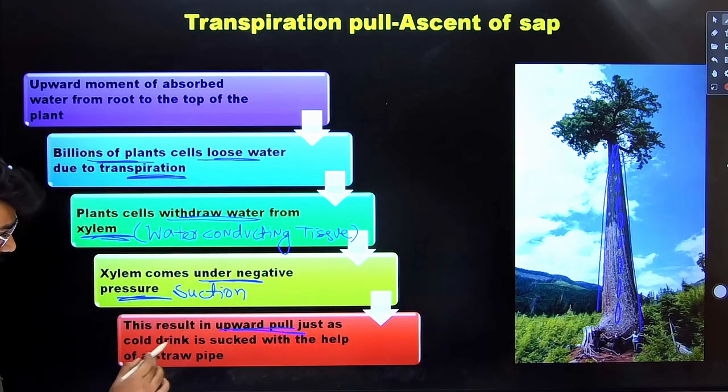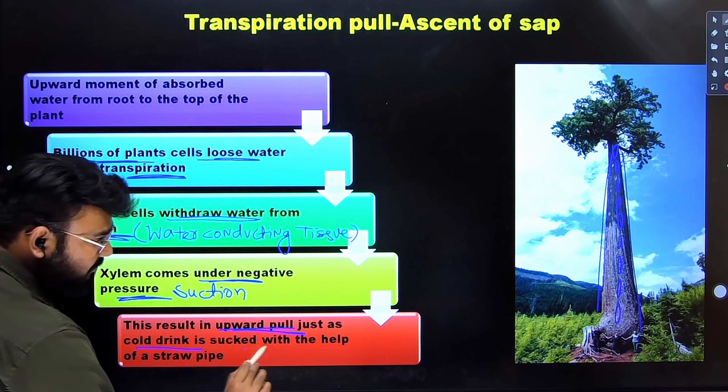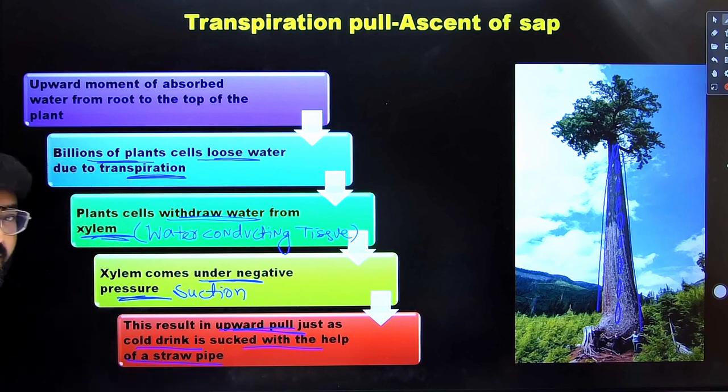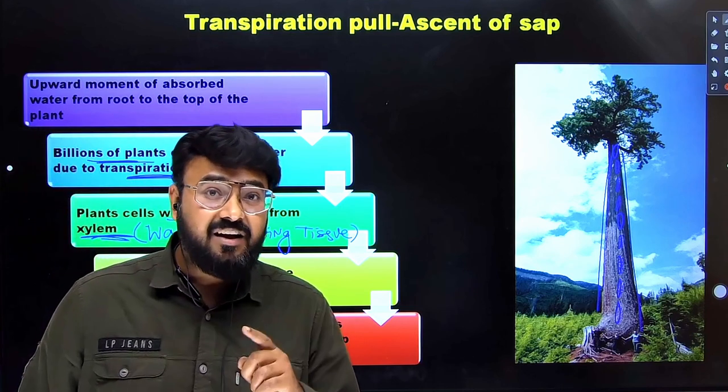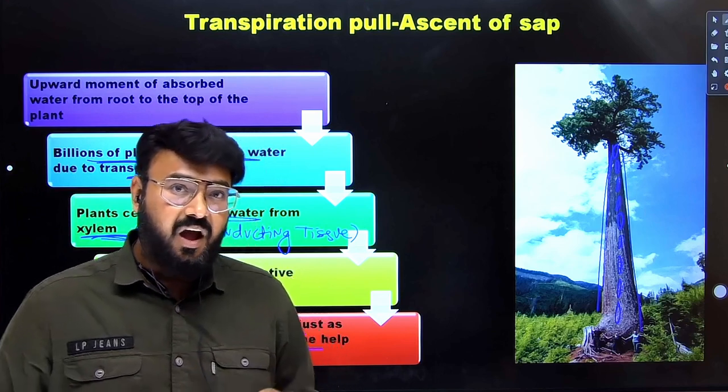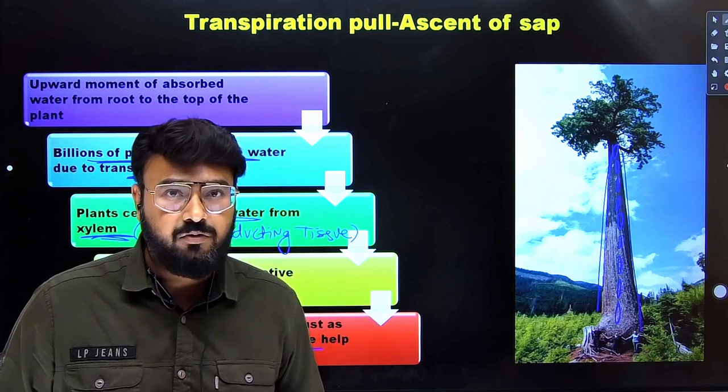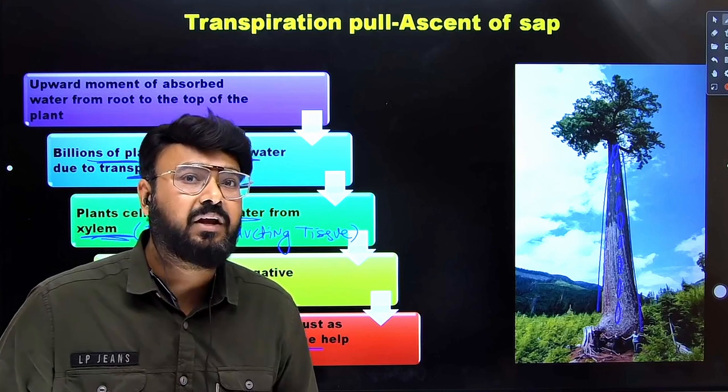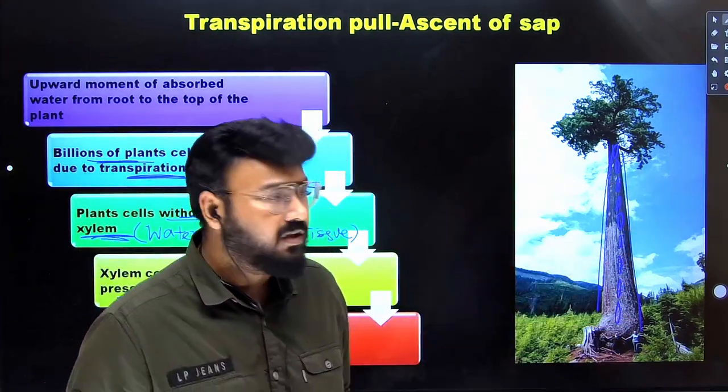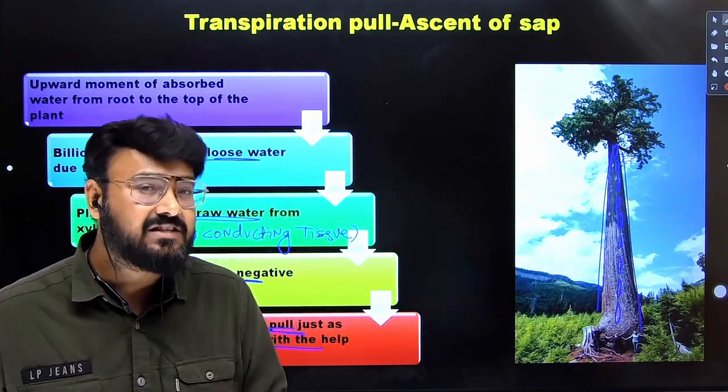And it is just like cold drink is sucked with the help of a straw pipe. But this arises one question that how the water comes continuously when it's pulled upward? How come the water column does not break? How water is coming up continuously? That is the question.